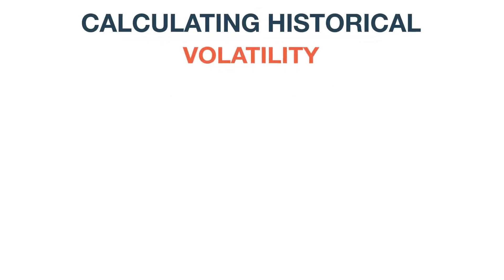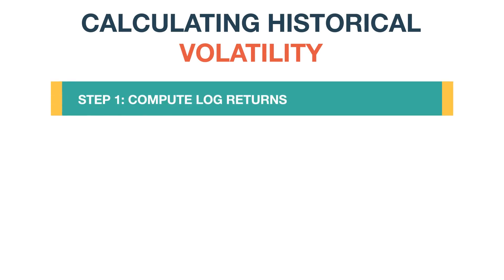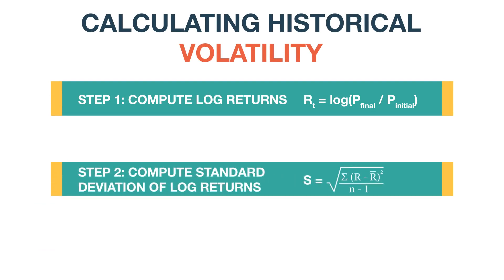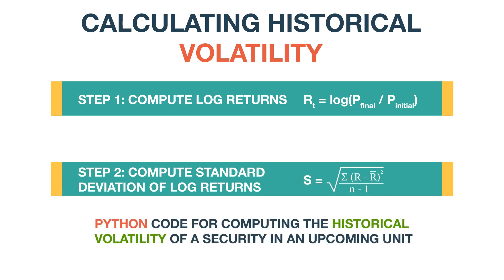For calculating the historical volatility, the first step is to compute the log returns for the time series. Once this is done, the next step is to compute the standard deviation of the log returns. You will be taken through a Python code for computing the historical volatility of a security in an upcoming unit.